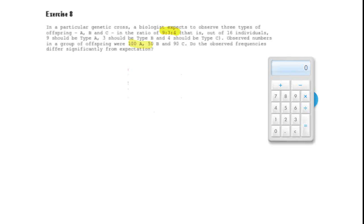Our observed data are 100 A, 50 B, and 90 C, so we need to test the hypothesis that the observed match the expected.